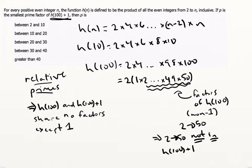That implies that whatever this smallest prime factor that we're looking for is, that's going to have to be larger than 50. That's going to have to be larger than 50.